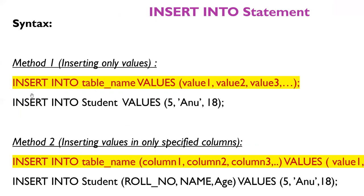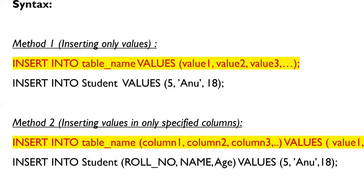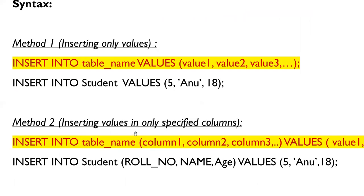For example, to insert into the student table: INSERT INTO students VALUES (5, 'Anu', 18). In this case you do not mention column names — you just insert the values. The second method is inserting values while also specifying the column names, so you identify which column each value belongs to.